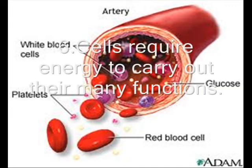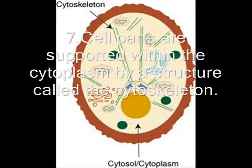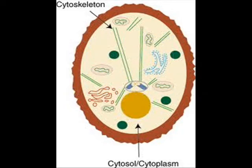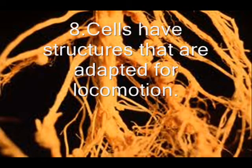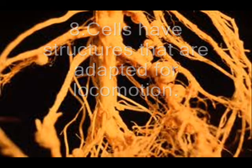Cells require energy to carry out many functions. Cell parts are supported by the clioteroplasm. There is a structure called the clioters. The clioters are adapted for working with cells.